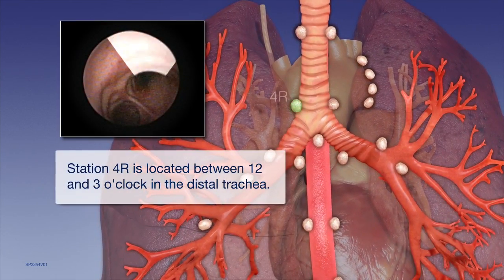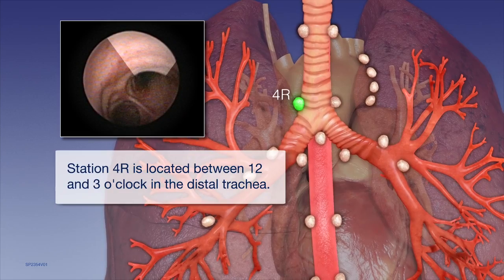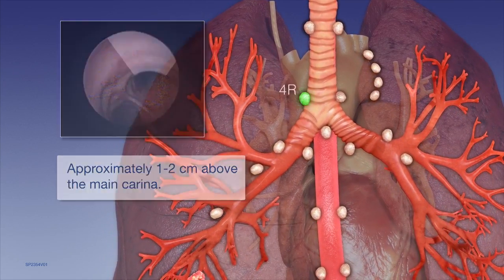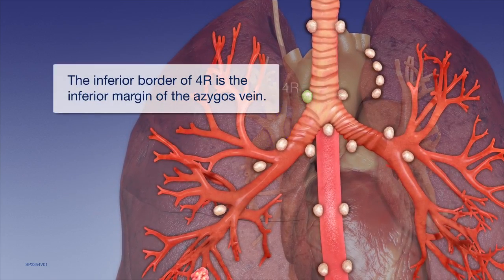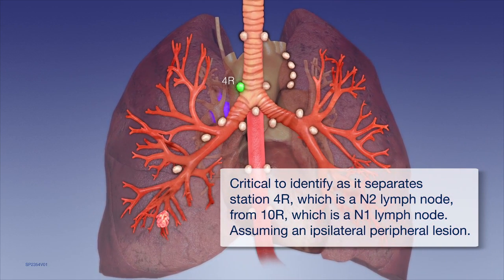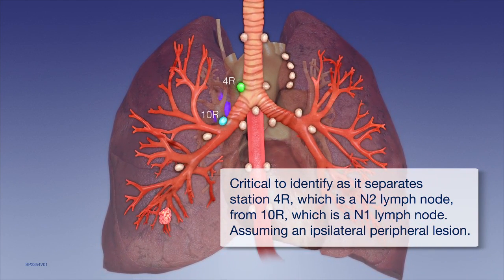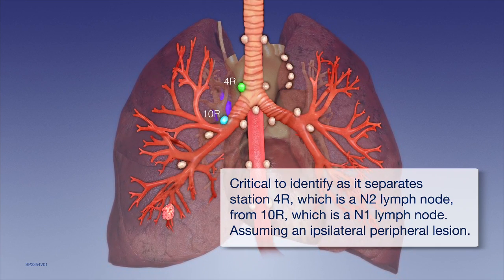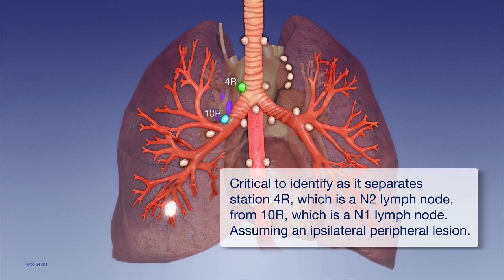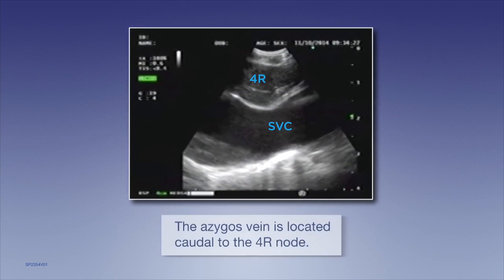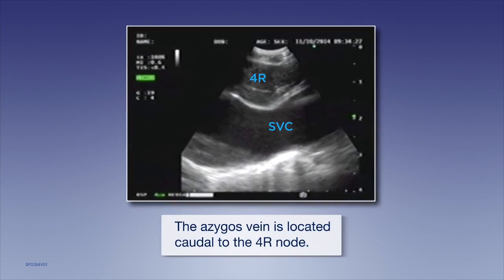Station 4R is located between 12 and 3 o'clock in the distal trachea, approximately 1 to 2 centimeters above the main carina. The inferior border of the 4R lymph node station is the azygous vein, which is critical to identify as this landmark separates Station 4R, which is an N2 lymph node, from Station 10R, which is an N1 lymph node, assuming an ipsilateral peripheral lesion. Here we identify the 4R lymph node with the superior vena cava anteriorly; the azygous vein is located caudal to the 4R node.